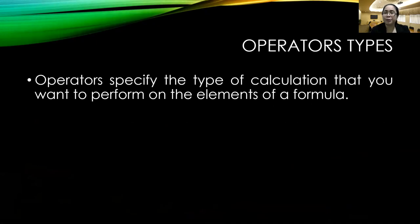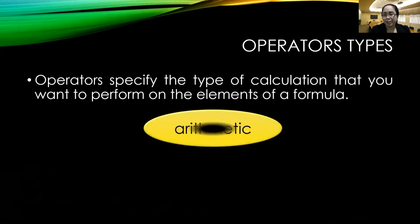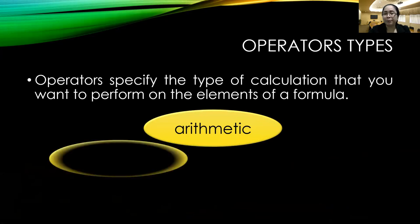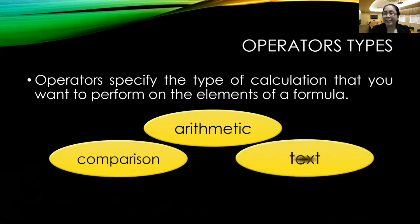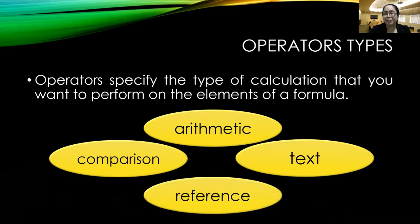What are operators really in Excel? The definition says operators specify the type of calculation that you want to perform on the elements of a formula. Again, as mentioned, there are four operator types: the arithmetic operators, comparison operators, the text operator, and fourth, the reference operators.